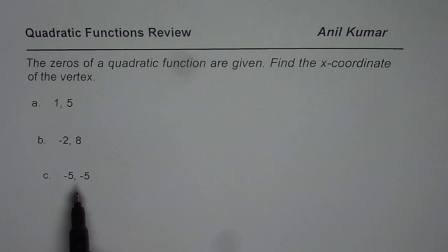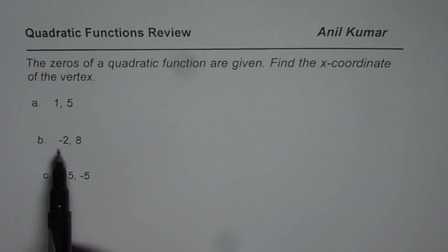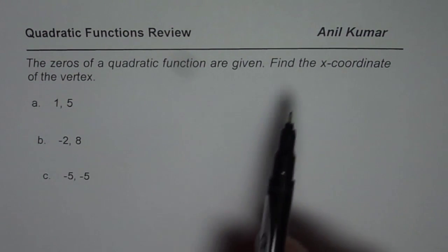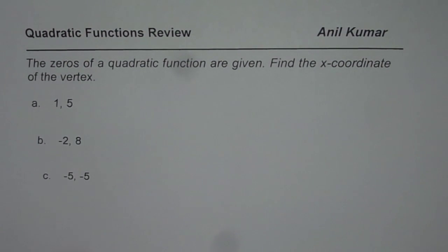So we have three different questions here. Zeros of the first function are at 1 and 5, the second one -2 and 8, third one -5 and -5. You need to find the x-coordinate of the vertex, just the x-coordinate. How do you find it?